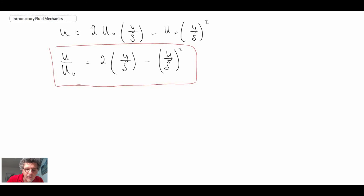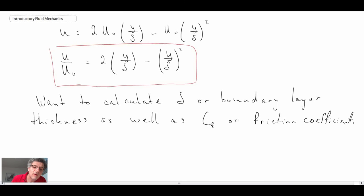Armed with this now, what we can do is we can go in and we can calculate delta, which is the boundary layer thickness, as well as the skin friction, which gives us the skin friction coefficient. In the next segment, what we'll be doing is taking a look first at delta, the boundary layer thickness, and then in a later segment, we'll look at the skin friction coefficient. We have a velocity profile. We can now continue on with the momentum integral analysis results and determine these values.